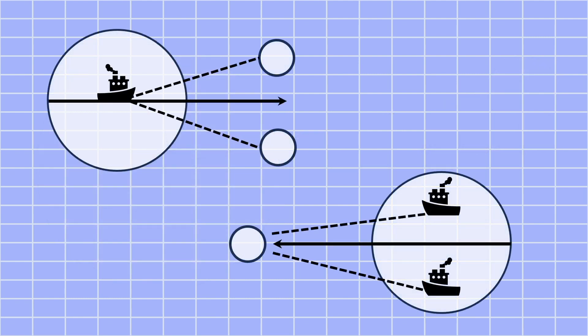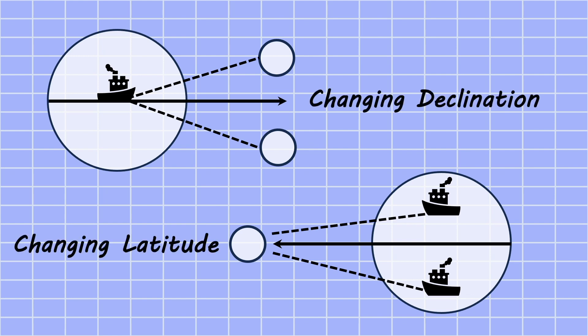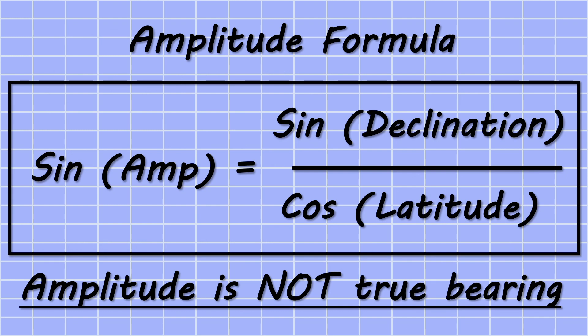Amplitudes are caused either by a change in declination, a change in latitude, or both. To calculate the amplitude we use the following formula: the sine of the declination divided by the cosine of the latitude gives us the sine of the amplitude. Therefore we must inverse sine that number to give us the actual value of the amplitude in degrees. A key point to remember is that the value of the amplitude is not the same as the true bearing of the sun at sunrise and sunset.